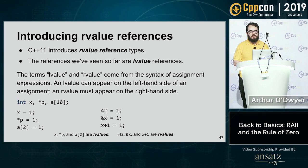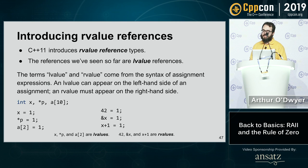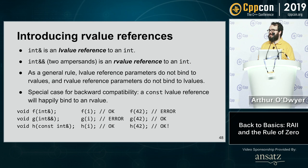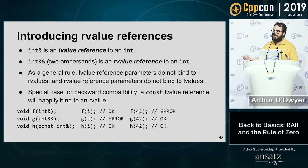Introducing R-value references. C++11 introduced R-value reference types. The references we've seen with a single ampersand are L-value references. L-value and R-value come from the syntax of assignment expressions: an L-value can appear on the left-hand side of an assignment — examples are x, *p, a[2]. R-values are things like 42, &x, x+1 — those cannot appear on the left-hand side and cannot be assigned to.